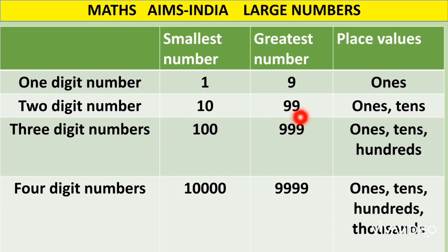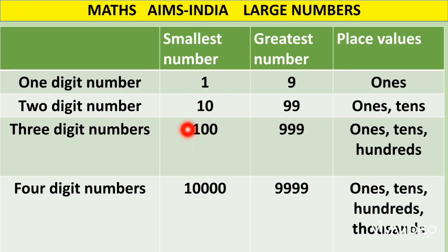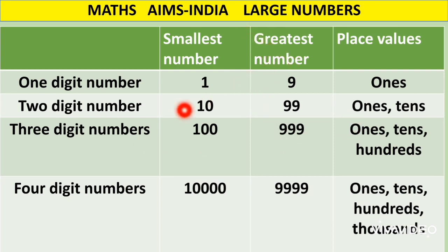Three digit numbers: if we add one to ninety-nine, we get hundred. Ninety-nine was the greatest two digit number, and after adding one we get hundred, which is the smallest three digit number. Three digit numbers end at nine hundred and ninety-nine, so nine hundred and ninety-nine becomes the greatest three digit number. Three digit numbers have three place values: ones, tens and hundreds.